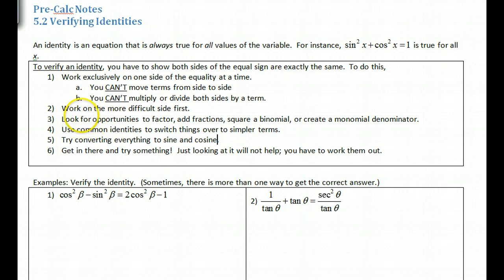Work on the more difficult side first. Look for opportunities to factor, add fractions, square a binomial, or create a monomial denominator. Use common identities to switch things over to simpler terms. Try to convert everything to sine and cosine. Get in there and try anything, something. Just looking at it will not help you. You have to work them out. It's like a puzzle where you try some things. If it doesn't work, erase, come back, and then work on it some more.